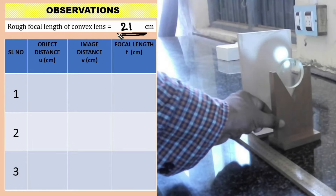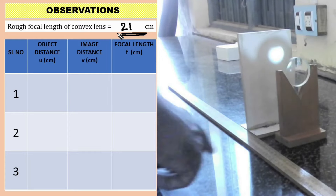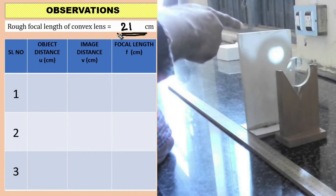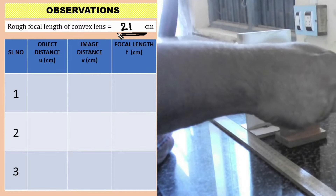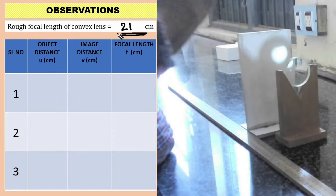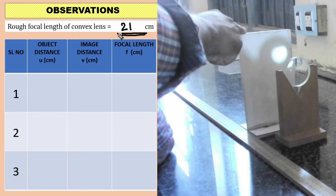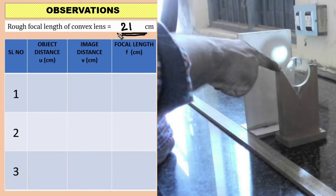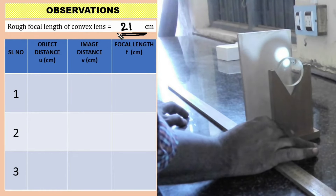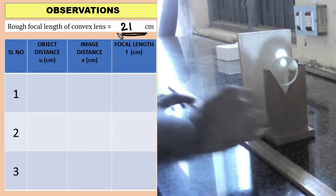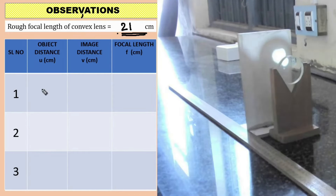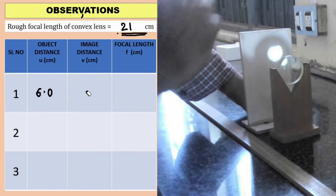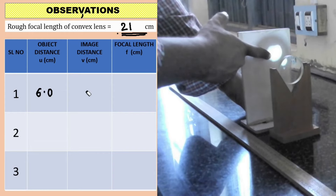Here, the concave lens is introduced. The distance between the concave lens and the screen is where the image of the concave lens has been formed. The object distance is 6 centimeters. The object distance is equal to 6.0 centimeters, and the least count is 0.1 centimeter. Now we need to find out the image distance. I am moving the screen away from the concave lens to form the clear image again.